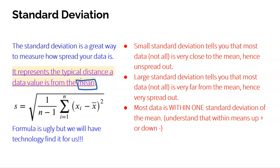If you have a low standard deviation, that means most data is near the mean — not spread out. Whereas if you have a large standard deviation, that means the majority of your data is far from the mean, and you're going to be more spread out. Now, before we dive too much further, let's look at the formula. S is the standard deviation.